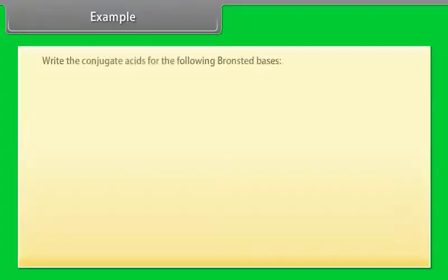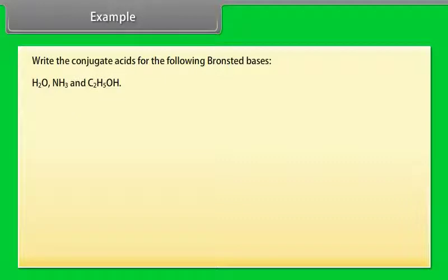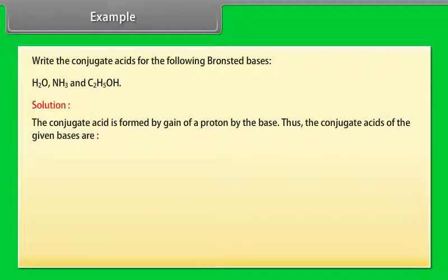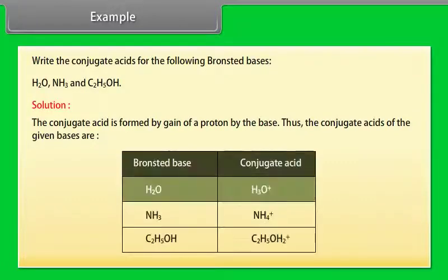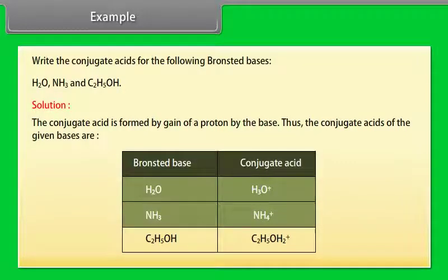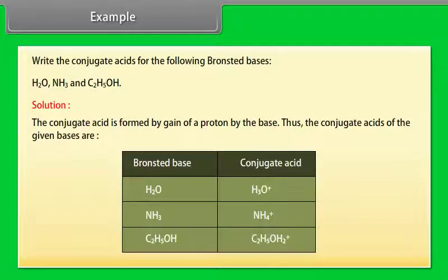Example: Write the conjugate acids for the following Bronsted bases — H₂O, NH₃, and C₂H₅OH. The conjugate acid is formed by gain of a proton by the base. Thus the conjugate acids are: for H₂O, H₃O⁺; for NH₃, NH₄⁺; for C₂H₅OH, C₂H₅OH₂⁺.